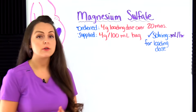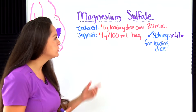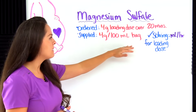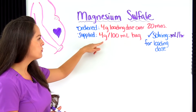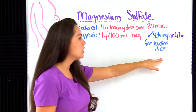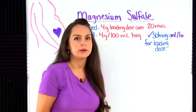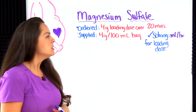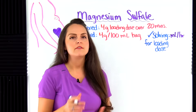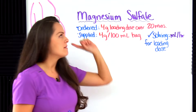Our first problem says that a patient with eclampsia has been ordered IV magnesium sulfate. The healthcare provider has ordered a four gram loading dose to be infused over 20 minutes. You're supplied with a bag of magnesium that reads four grams per 100 mL, and what you need to solve for is the loading dose infusion rate — how many milliliters per hour to set the pump at.